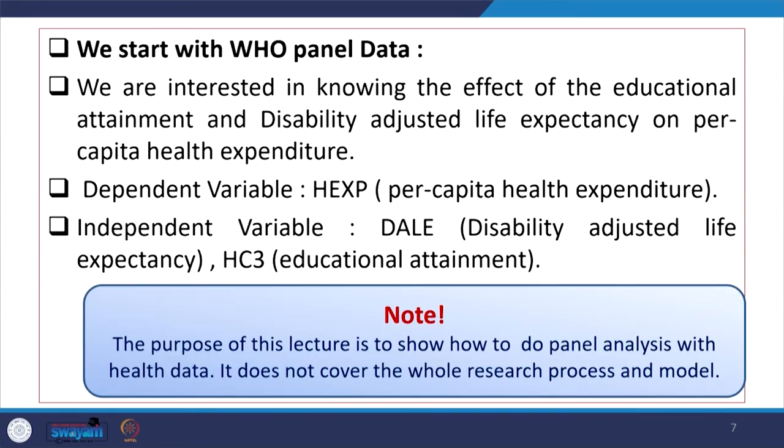I will also show it with the explanation and in writing. We are explaining the WHO panel data just to observe the effect of educational attainment and disability adjusted life expectancy on per capita health expenditure. The health expenditure variable was taken as the dependent variable. Dependent variable is per capita health expenditure whereas the independent variables are like educational attainment and DALE, disability adjusted life expectancy. The purpose of this lecture is to show how to do panel analysis with health data. It does not cover the whole research process and model. We will steadily capture other directions of panel data. But at this moment we are just trying to give with the background information about a common constant model which is essentially required for discussion in order to start with fixed effect and random effect model.